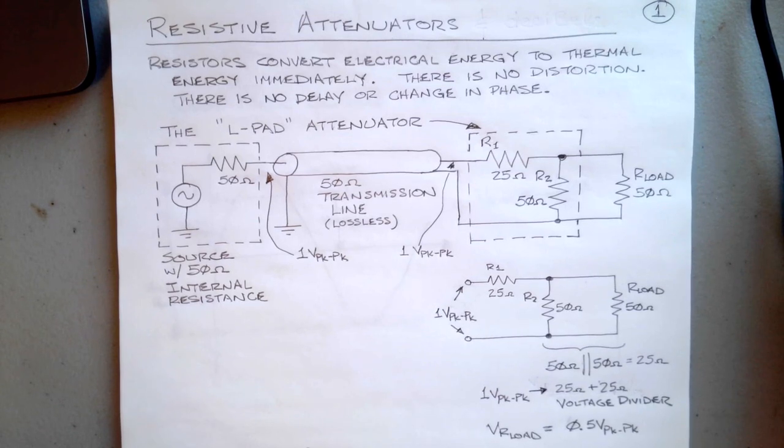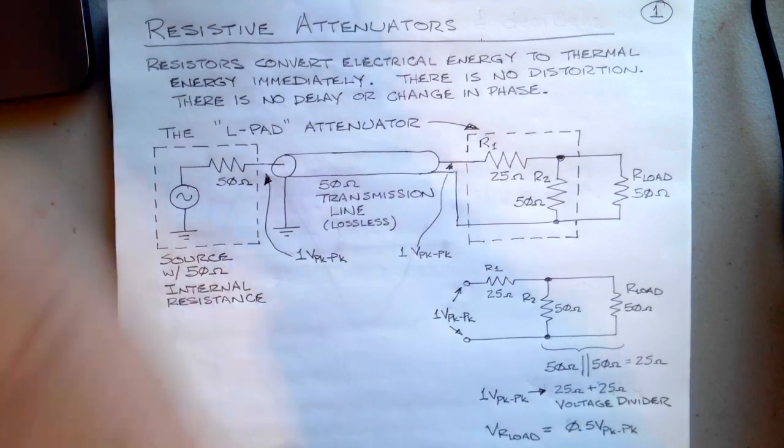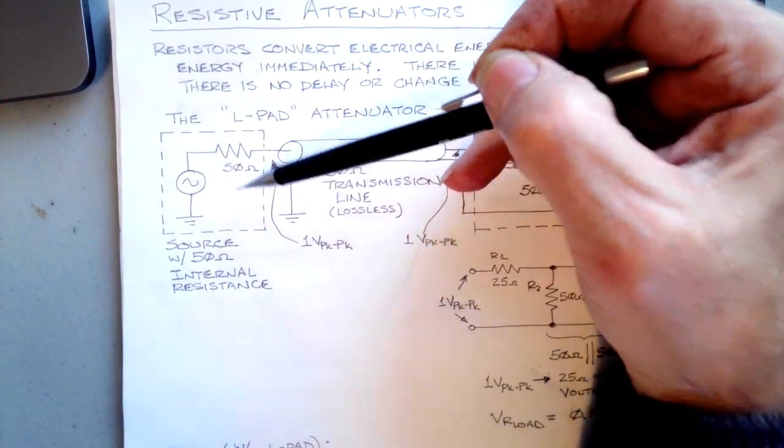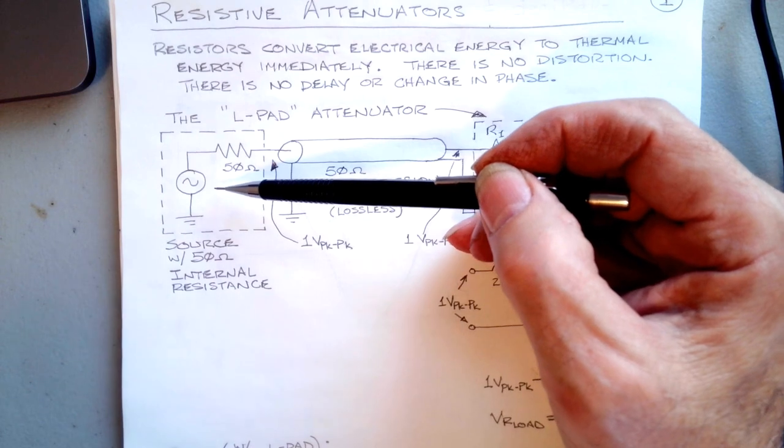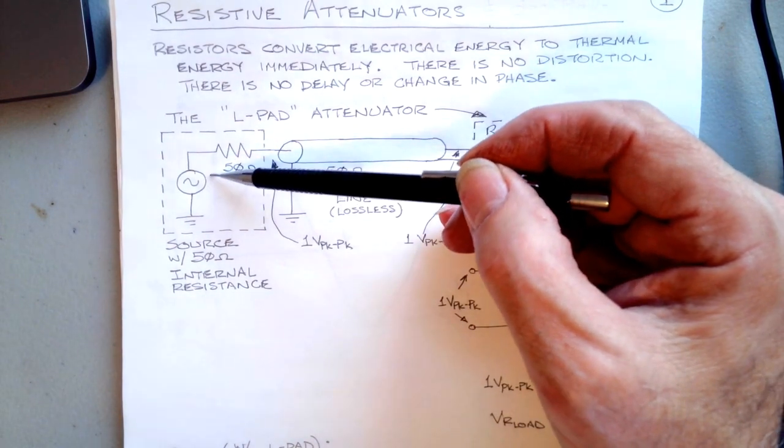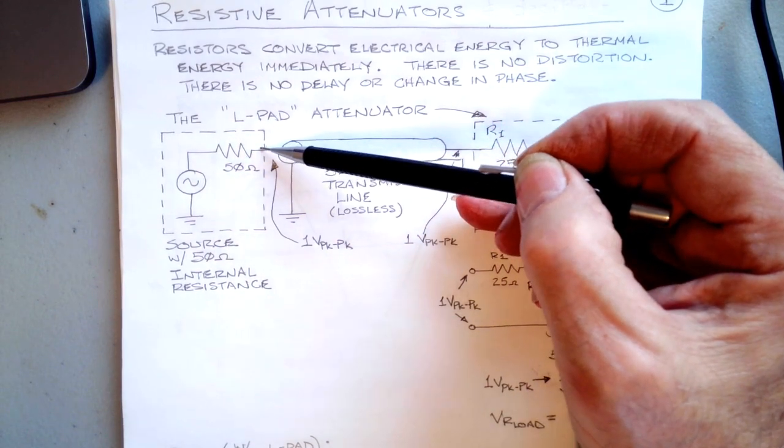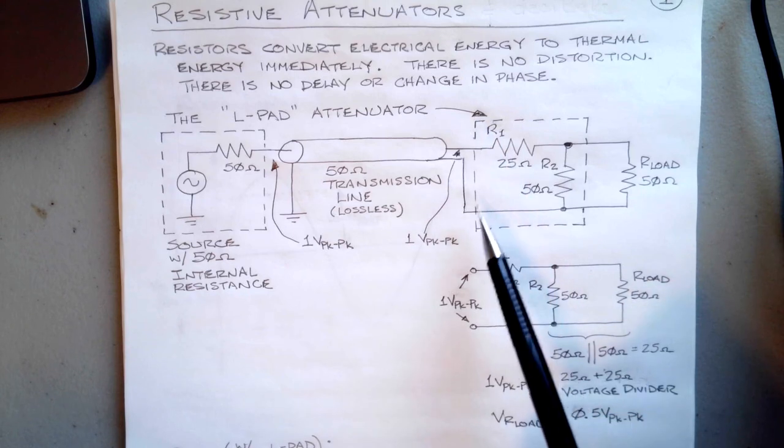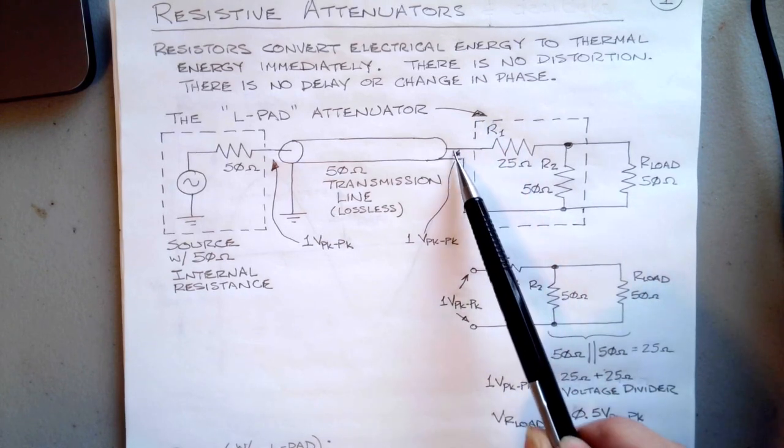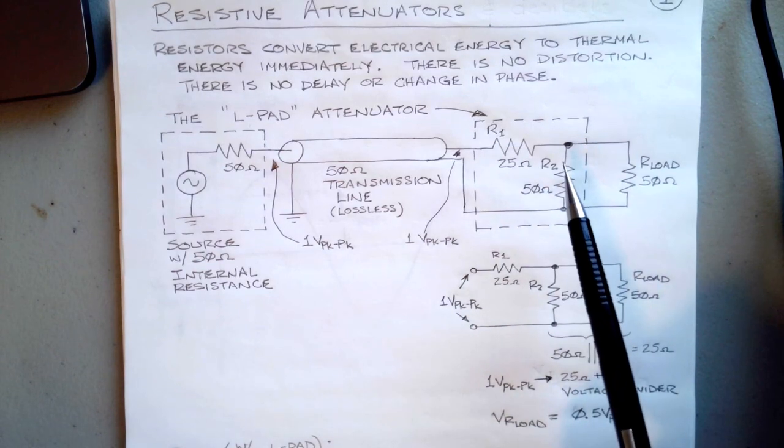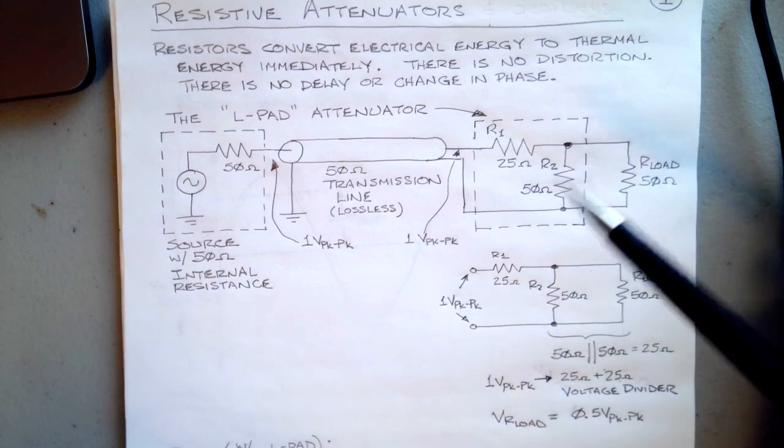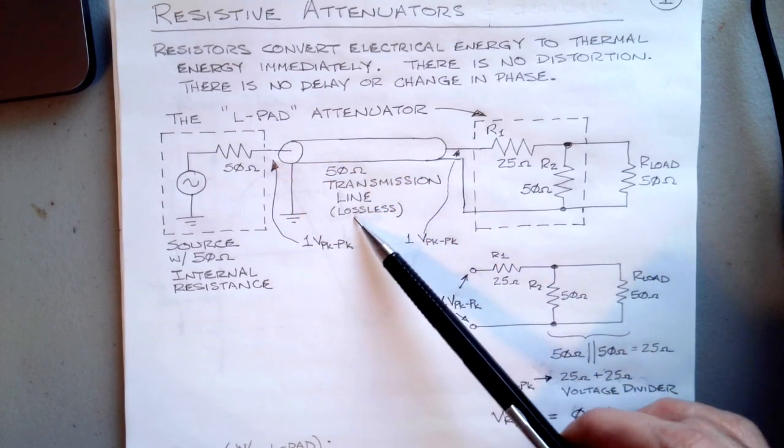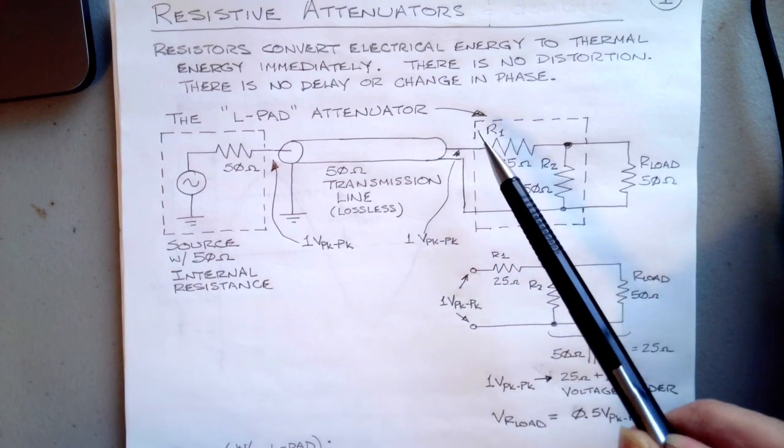Very often in test situations you might introduce this attenuator. As you can see, this is our source here—very Thévenin in nature. That's the way we represent sources. It has some AC source here and a 50 ohm internal resistance. It drives the transmission line and then it could drive the load directly, but we stuck in a resistor network in here between the end of the transmission line and the load, and it's going to waste power for us.